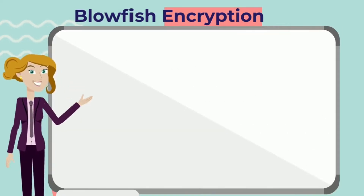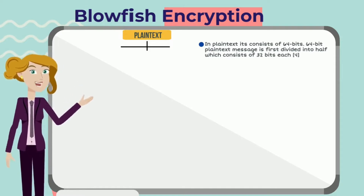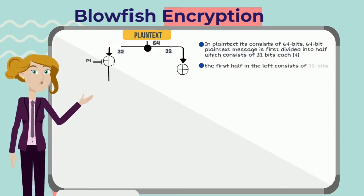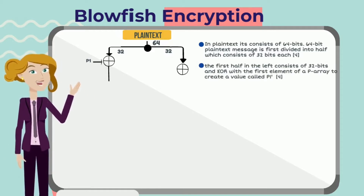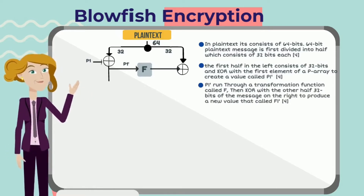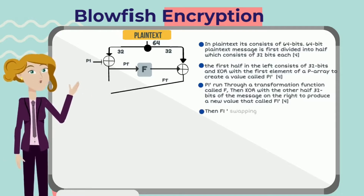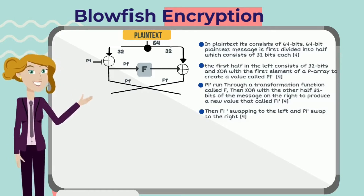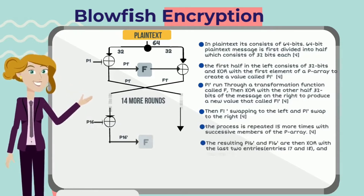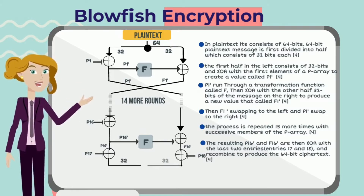Let's take a look at the encryption process in Blowfish. The plaintext consists of 64 bits and is first divided into two halves of 32 bits each. The left half is XORed with the first element of the P-array to create a value called V1 prime. V1 prime runs through a transformation function called F, then XORed with the right 32-bit half to produce a new value called S1 prime. S1 prime moves to the left and P1 prime is swapped to the right. This process is repeated 15 more times with successive elements of the P-array. The resulting P16 prime and F16 prime are XORed with entries 17 and 18 and recombined to produce the 64-bit ciphertext.